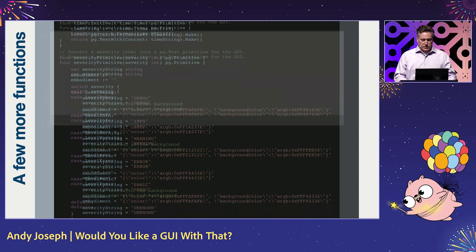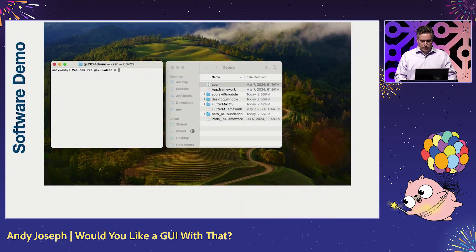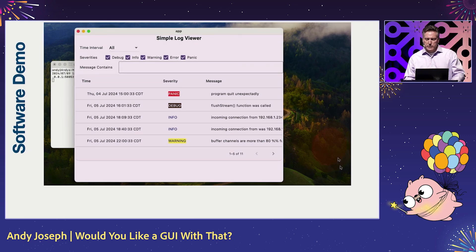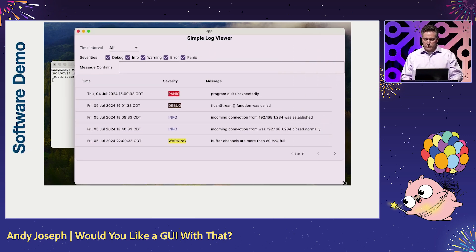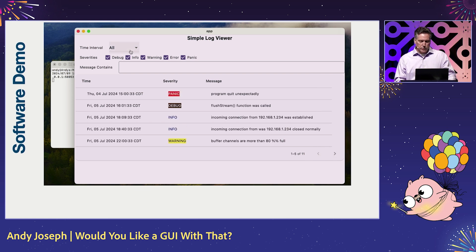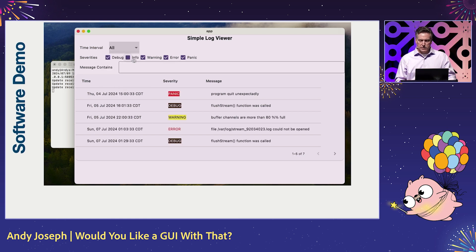Let's see this actually work. We go ahead and launch our Go program, then we launch our application, and right away you can see the GUI being built right on the screen. Then we can page through the log items. Then we go up to the top and change the interval to the last day, and you can see the information is being changed dynamically.